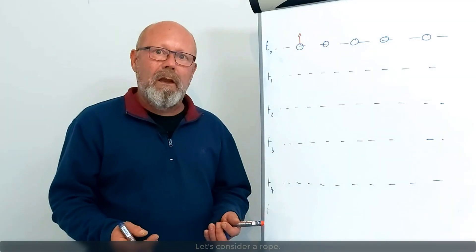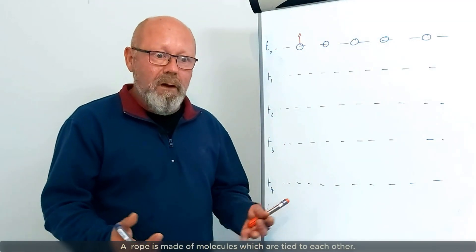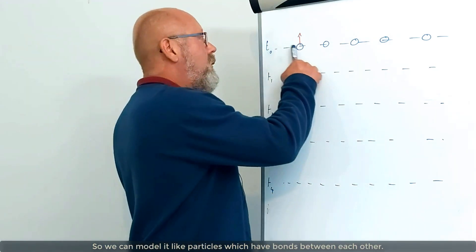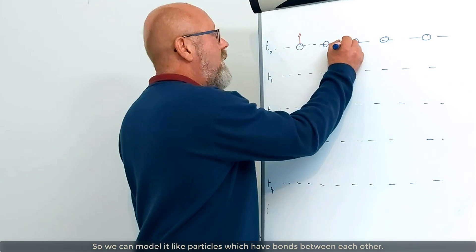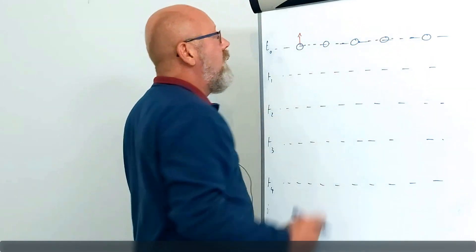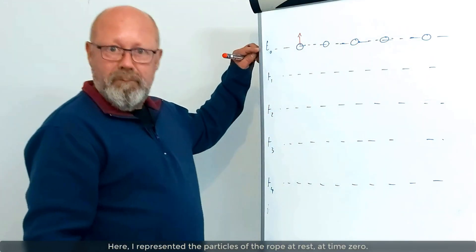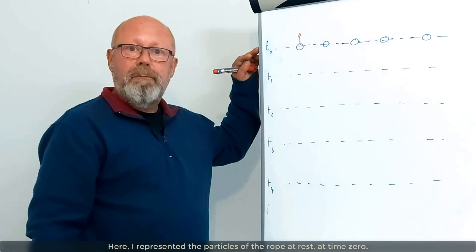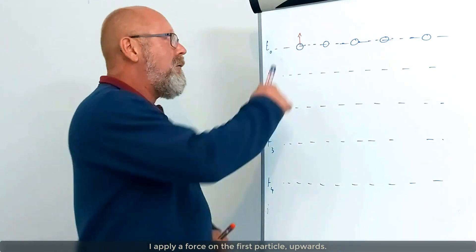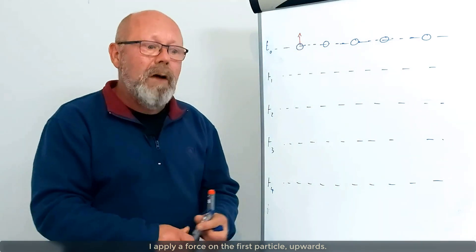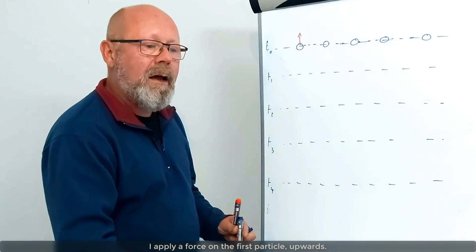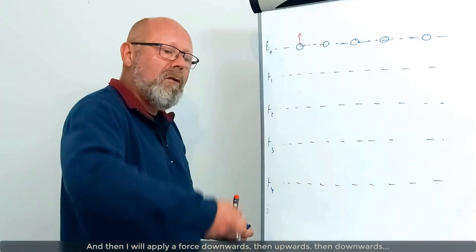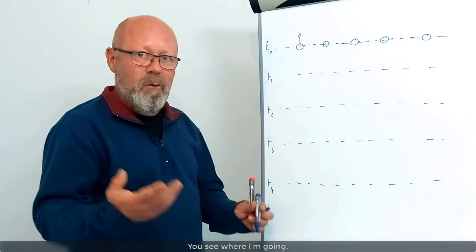Let's consider a rope. A rope is made of molecules which are tied to each other. So we can model it like particles which have bonds between each other. Here I represented the rope, or the particles in the rope, at rest, at time zero. I apply force on the first particle upwards, meaning that I'm taking the rope and I'm applying a force upwards like this. And then I will start to apply force downwards and upwards and downwards.